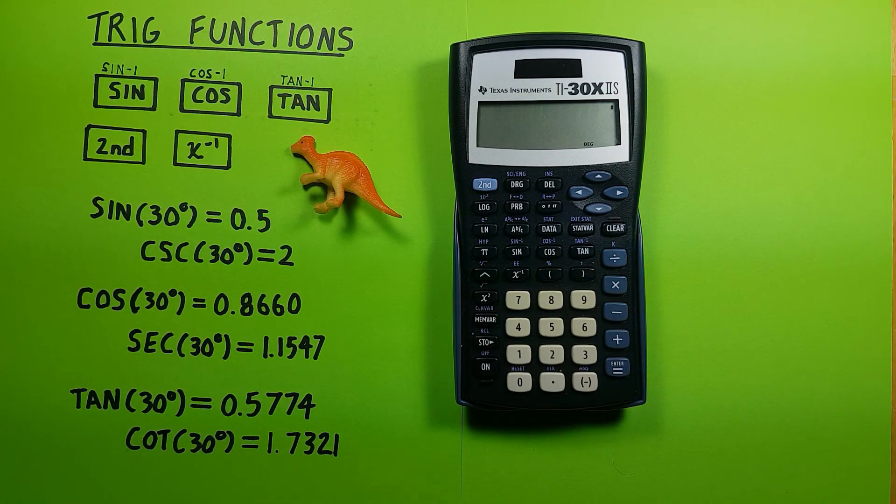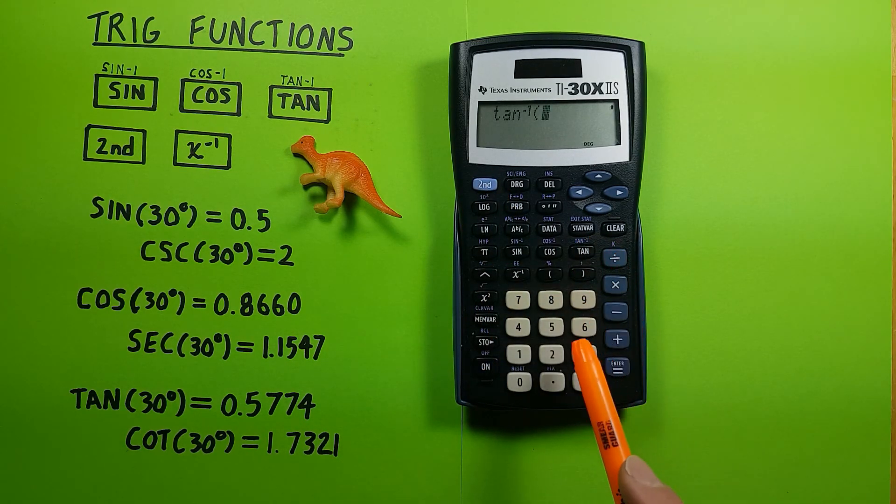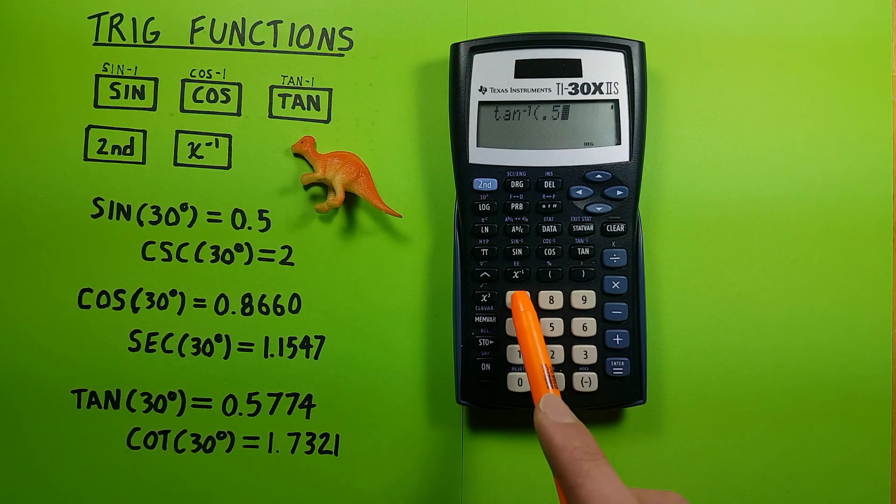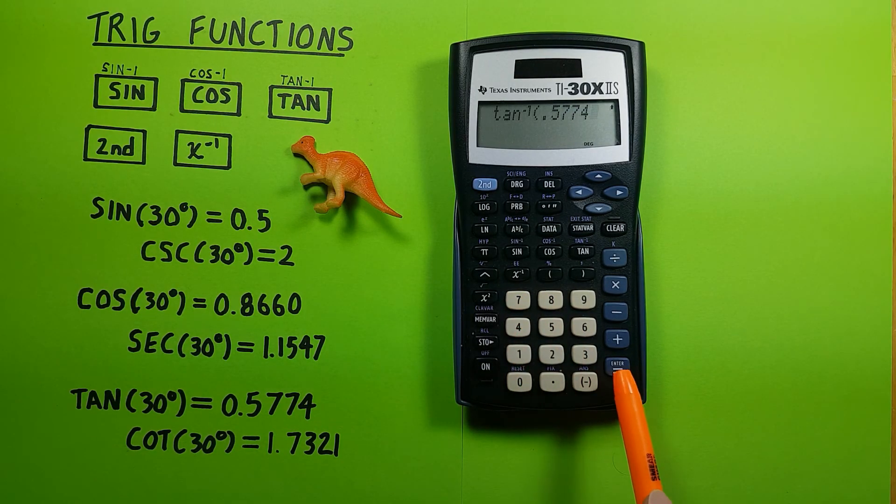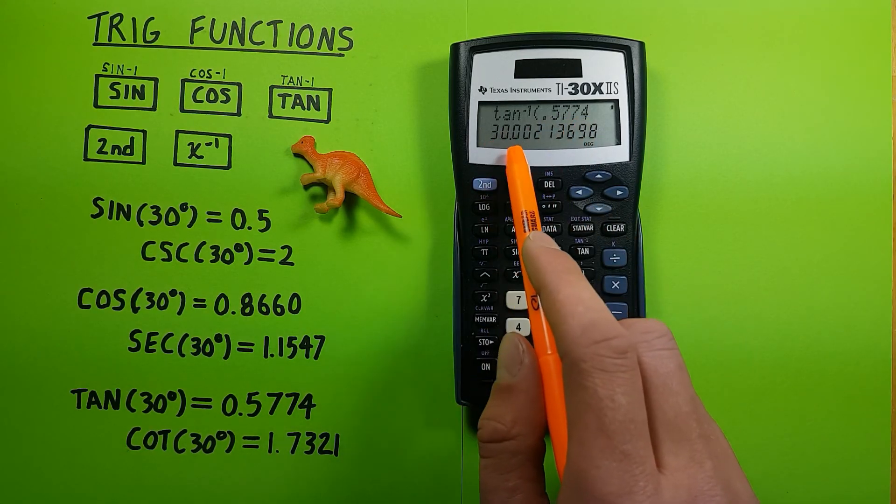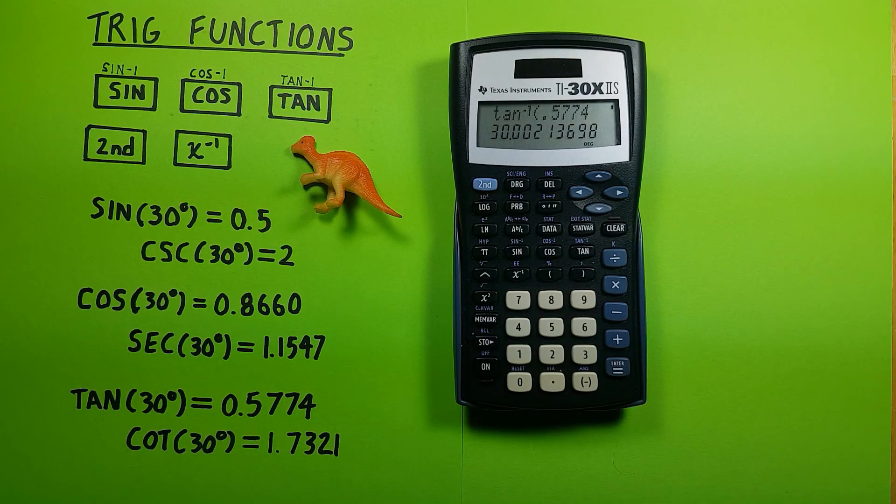And for arc tan, second function tan, and remember we got 0.5774 equals. Since we rounded this, we're not quite getting 30 degrees, but we get what would round to it. So the arc tan of 0.5774 is equal to 30 degrees.